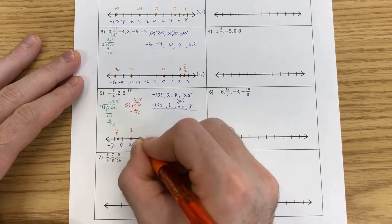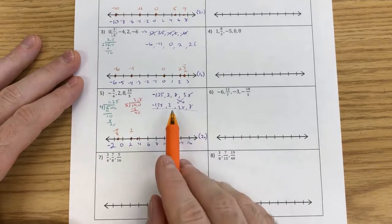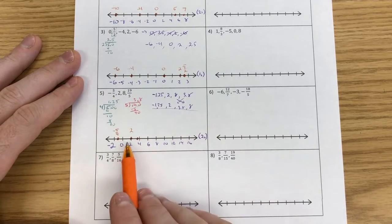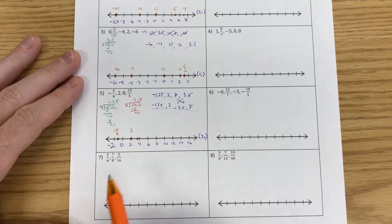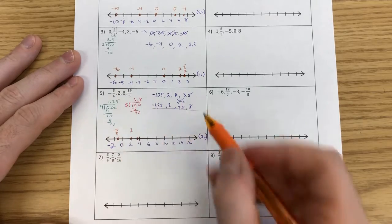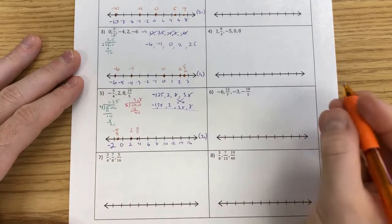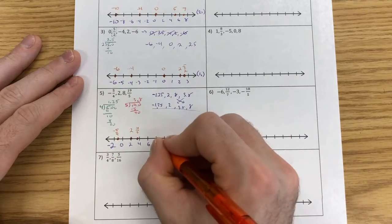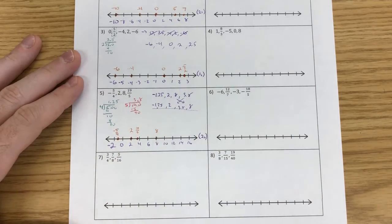I plot 2, and then I have another number almost at 4 — it is between 2 and 4, but closer to 4 because it's almost 4. That was my 19 fifths, which equaled 3.8. The last number is 8.